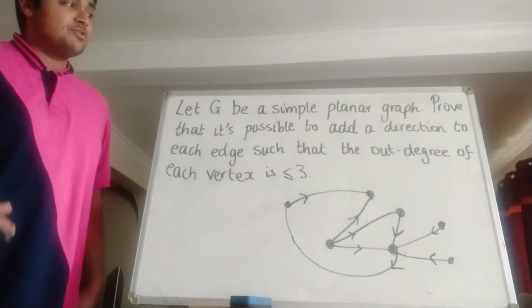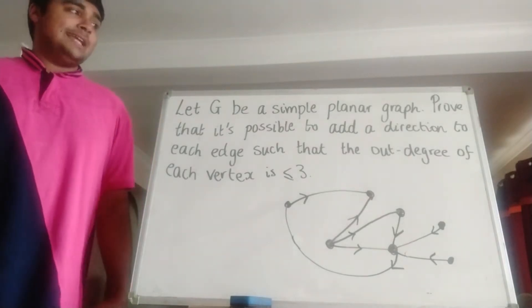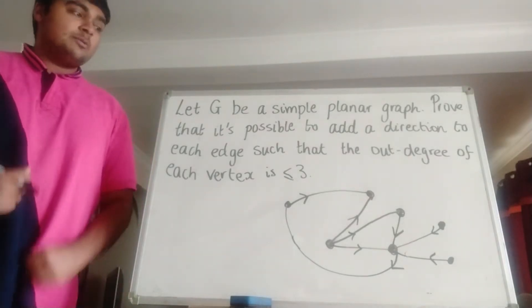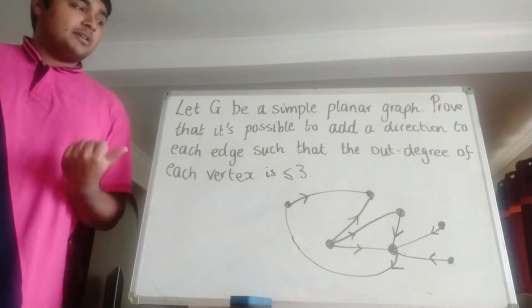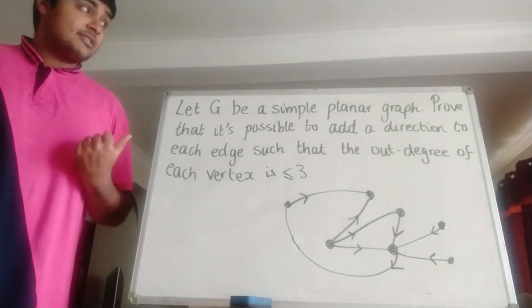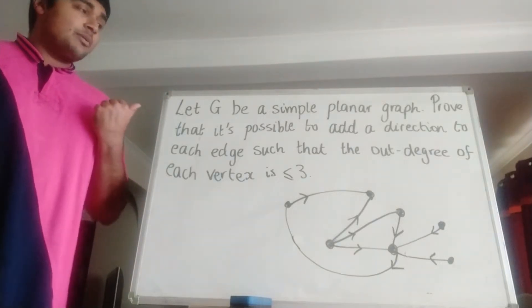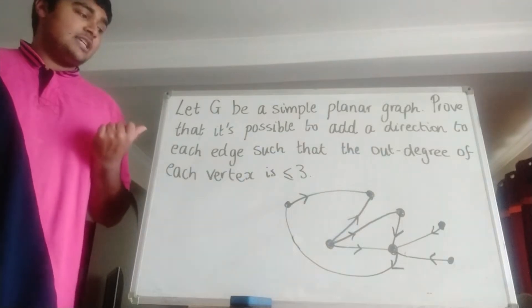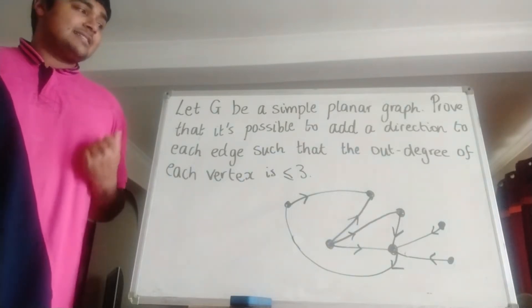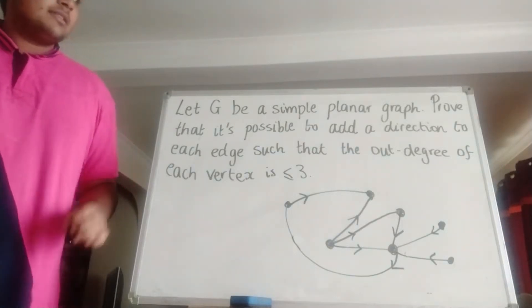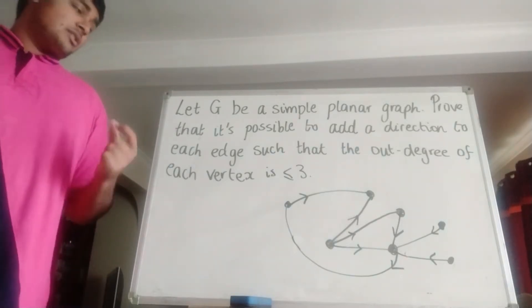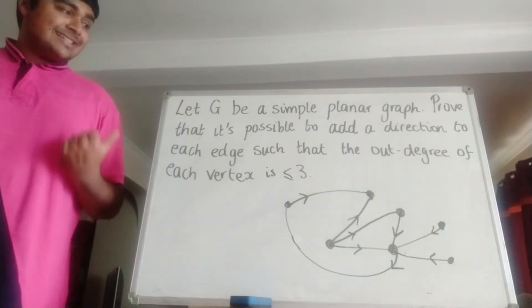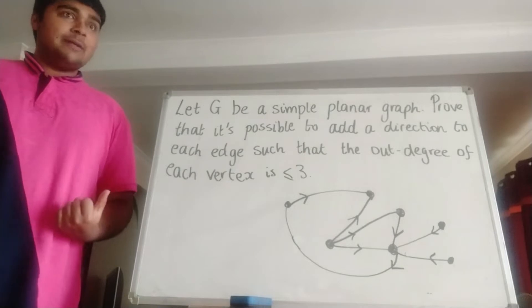Anyway, this is what we have. We have G, a simple planar graph, which means it's a graph where none of the edges cross. And we want to prove that it's possible to add a direction to each edge in such a way that the out-degree of each vertex is at most 3.